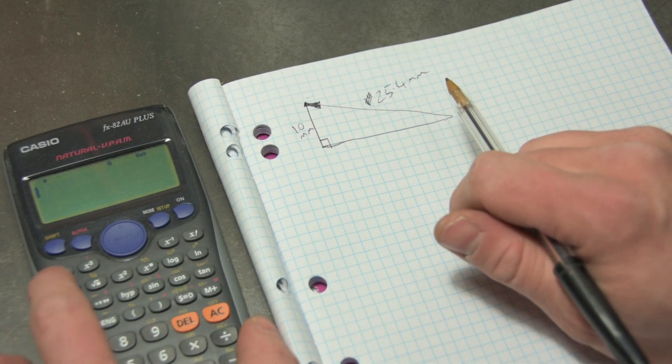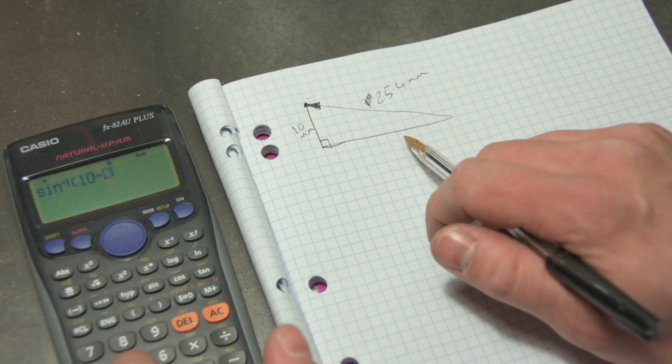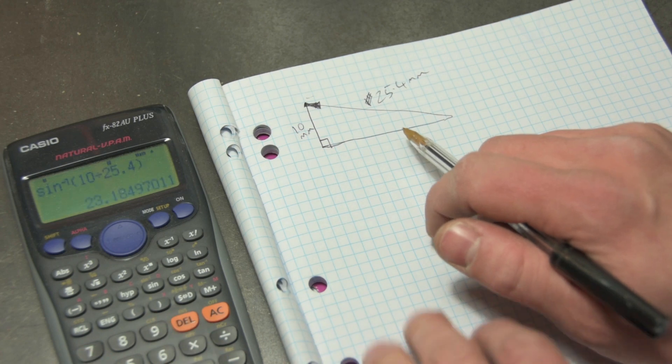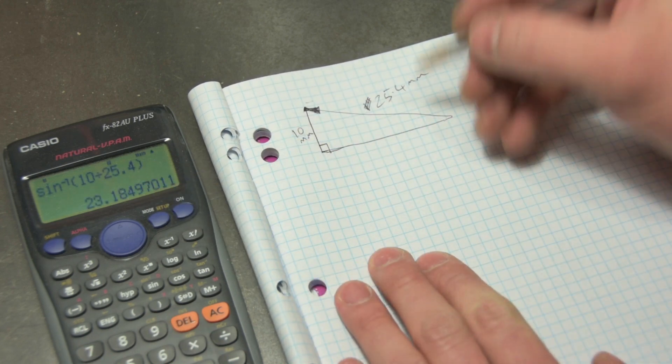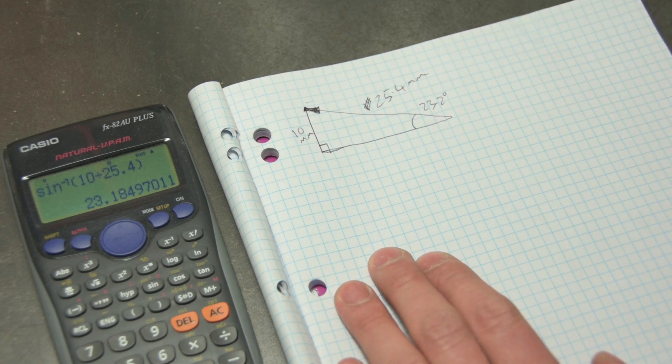So if I do an inverse sine of ten over 25.4, 23.2 degrees should be our magic angle.